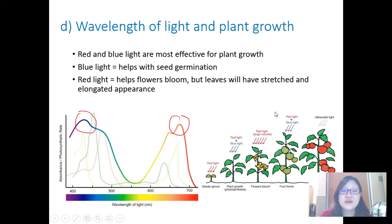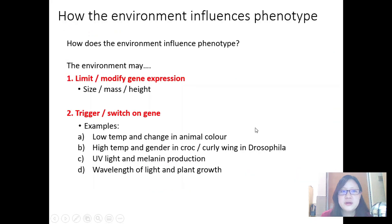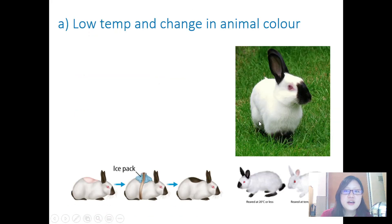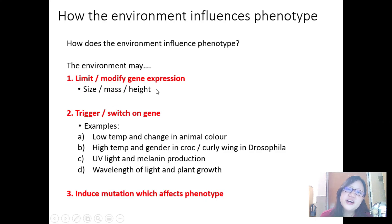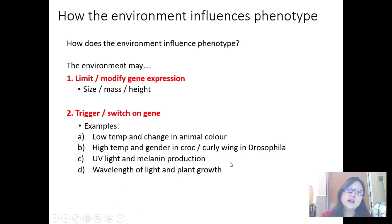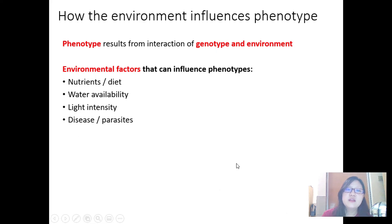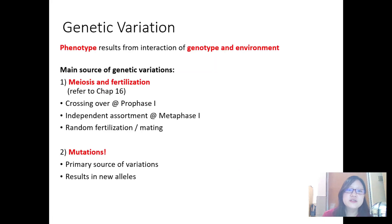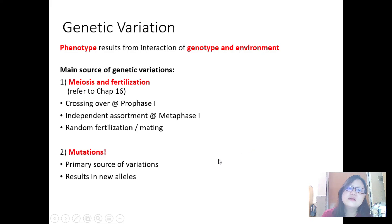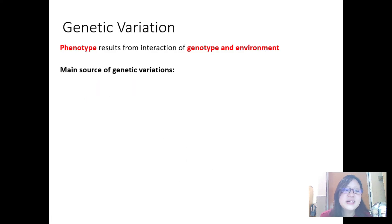So what have we learned? Phenotype is determined by genotype and the environment. The environment influences phenotype by limiting or modifying gene expression, triggering or switching on genes, and inducing mutations that affect phenotype. Genetics influences phenotype through genes coding for proteins. The main sources of genetic variation are meiosis and fertilization, and mutations. That's it for this part — I'll see you next video. Bye!